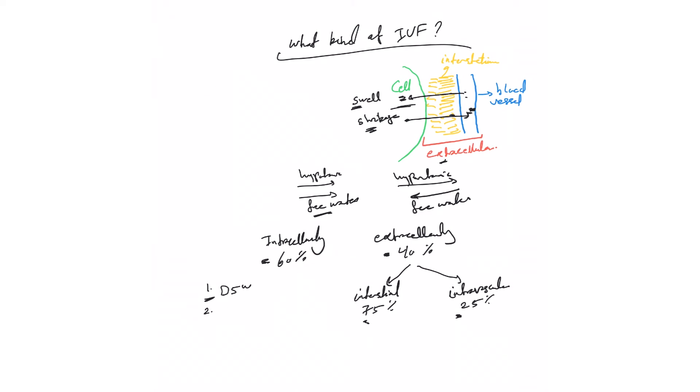How about NS? Normal saline is an isotonic solution with minimal or no free water, so basically all of it will be extracellularly. No free water will go into the cell, theoretically. It will follow this rule: 75%, which means 750 cc, will go into the interstitium and 250 cc will remain intravascularly. That's the reason when you give a lot of normal saline, you start seeing edema—the fluids accumulate more into the interstitium.